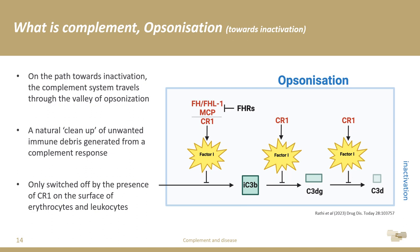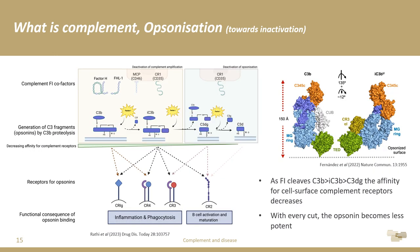This is all to do with levels of affinity. Every time C3B is cleaved, the affinity for specific receptors on immune cells and phagocytes changes. As you slowly get to smaller and smaller cleavage products of C3, the affinity drops off. Ultimately, by the time you reach the end, there is very little affinity left, and the immune cells become disinterested, disengage, and wander off.